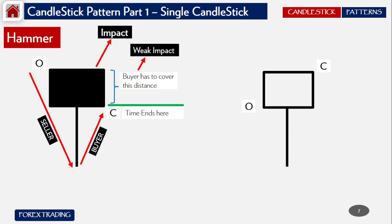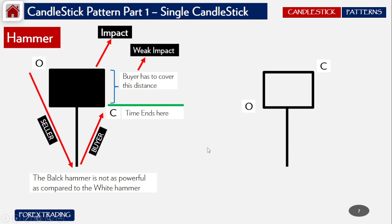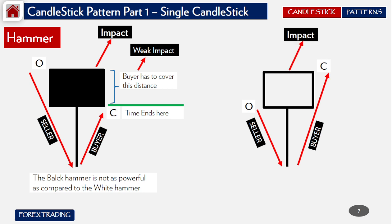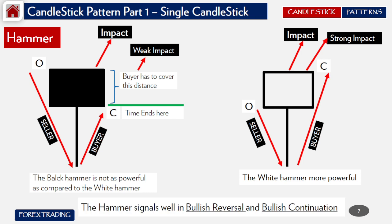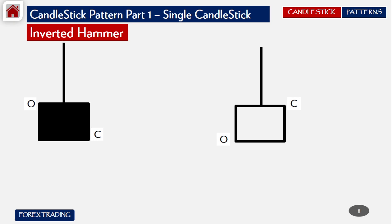The black hammer is not as powerful as the white hammer. In the white hammer, the price opens lower and closes higher — sellers take it down to the bottom of the wick, then buyers take it up to close above the open. In this case we have an impact on the upper side and we call it a strong impact. The white hammer is more powerful than the black hammer and signals a bullish reversal or bullish continuation.